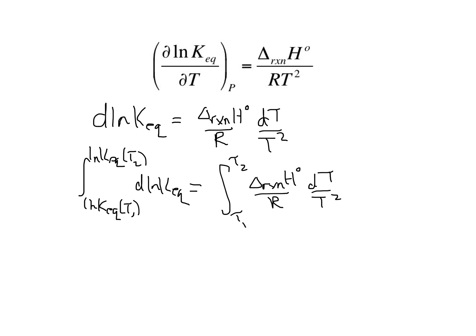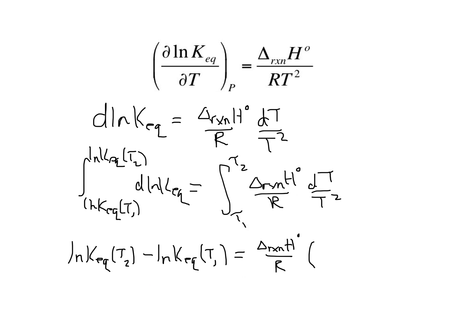We end up with the natural log of the equilibrium constant at T2 — the temperature we want to know the equilibrium constant at — minus the natural log of the equilibrium constant at T1, is equal to delta H of reaction in the standard state divided by R, times the quantity 1 over T2 minus 1 over T1, where we have a minus sign in front of the whole thing because the integral of DT over T squared is minus 1 over T. This then allows me to calculate the equilibrium constant at a temperature that I don't know, from the equilibrium constant at a given temperature and the delta H of reaction.